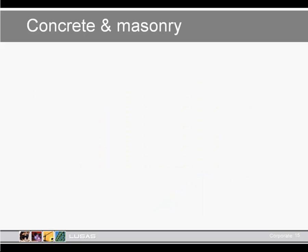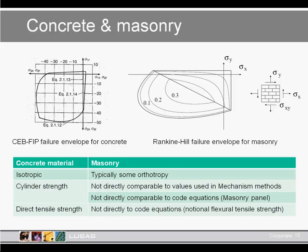We are using a concrete material model here, and a word of caution on the suitability of using a concrete model for masonry. There is a lot of similarity between the two — low tensile strength and high compressive strength. However, the test methods differ: for concrete we use cylindrical tests, whereas for masonry we tend to use blocks with different test types. But you can normally apply the concrete material models with reasonable confidence for this type of application.